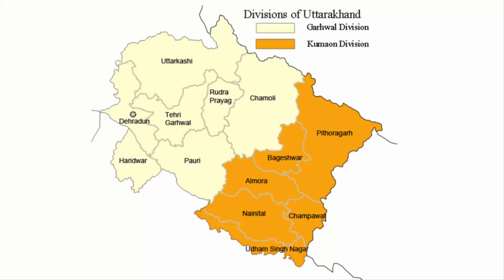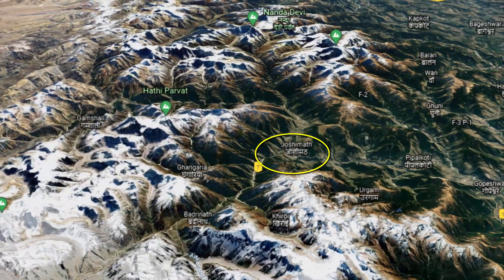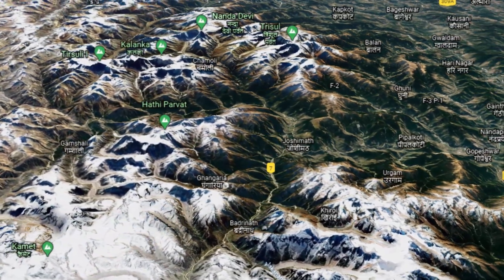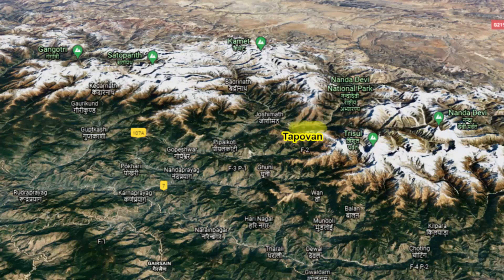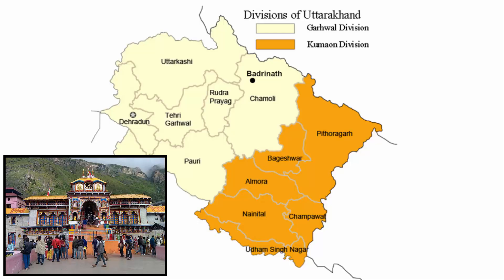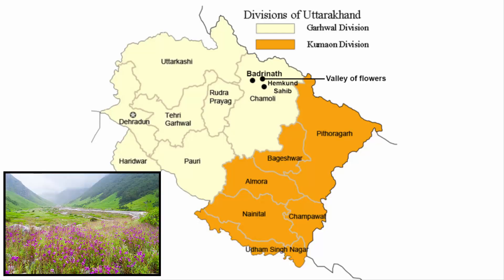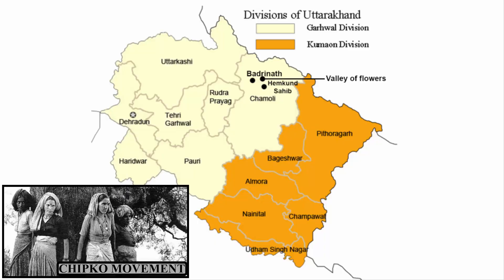Chamoli district is part of the Garhwal division of Uttarakhand. The people of Garhwal are known as Garhwali and they speak the Garhwali language. The region consists of rugged mountain ranges running in all directions and separated by narrow valleys, which in many cases become deep gorges or ravines. The highest mountains are in the Eastern Chamoli district. Chamoli district also has many pilgrimage and tourist sites including Badrinath, Hemkund Sahib, and Valley of Flowers. Chamoli also happens to be the birthplace of the famous Chipko movement.